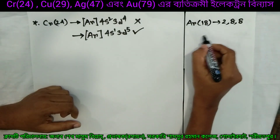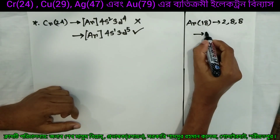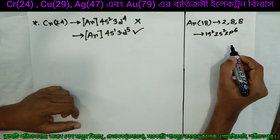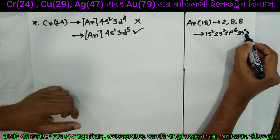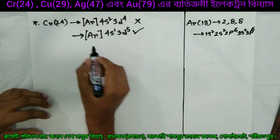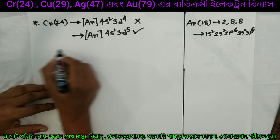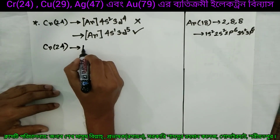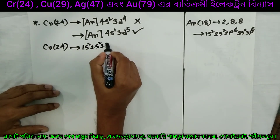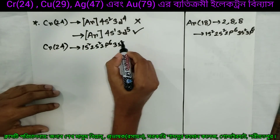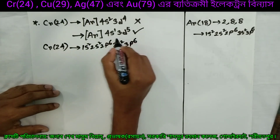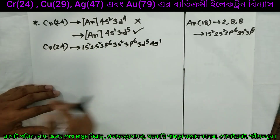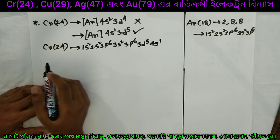This 2 means 1s2. This 8 means 2s2, 2p6, and the next is 3s2, 3p6. I am going to write chromium-24: the configuration is 3d5, 4s1. This is the chromium configuration.